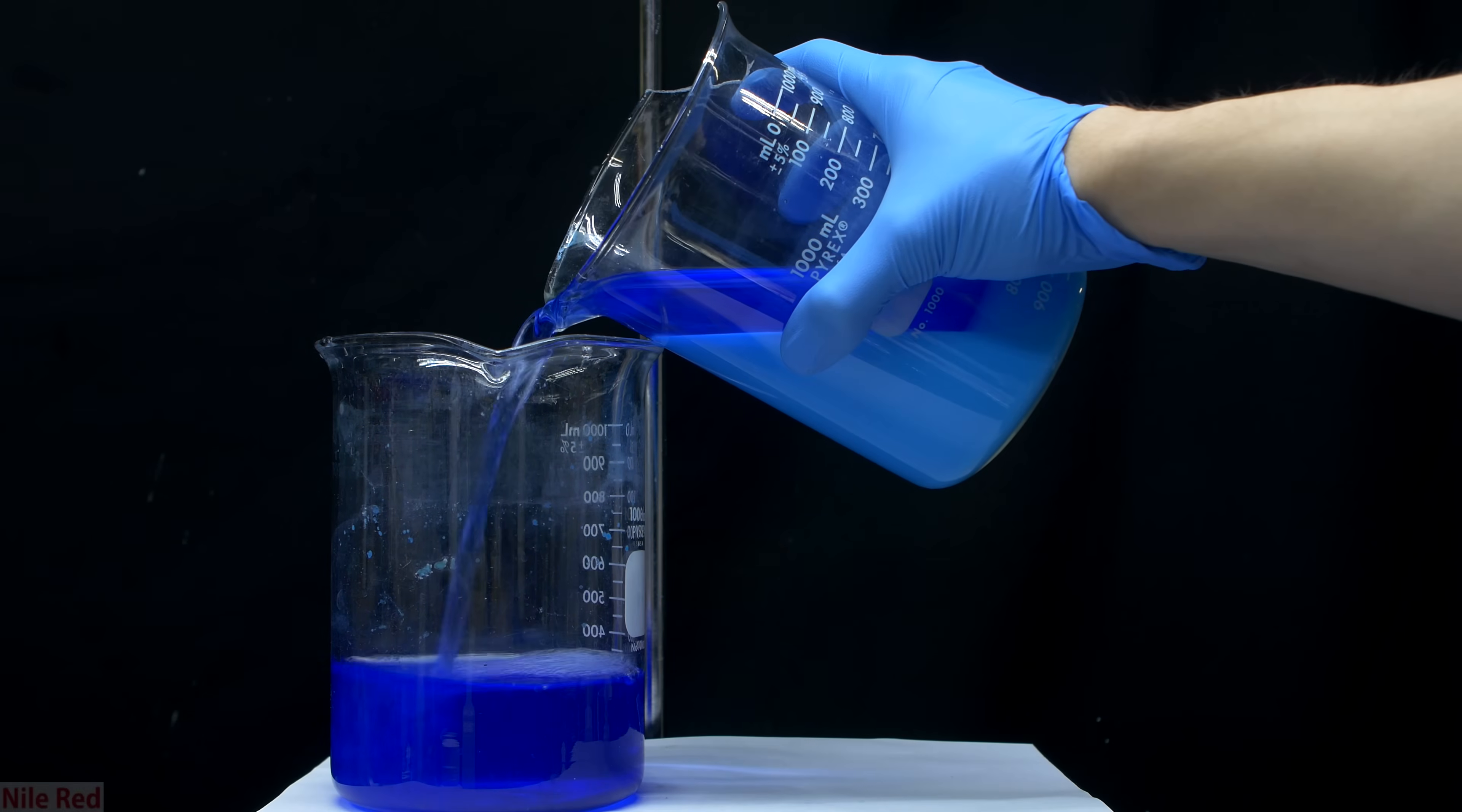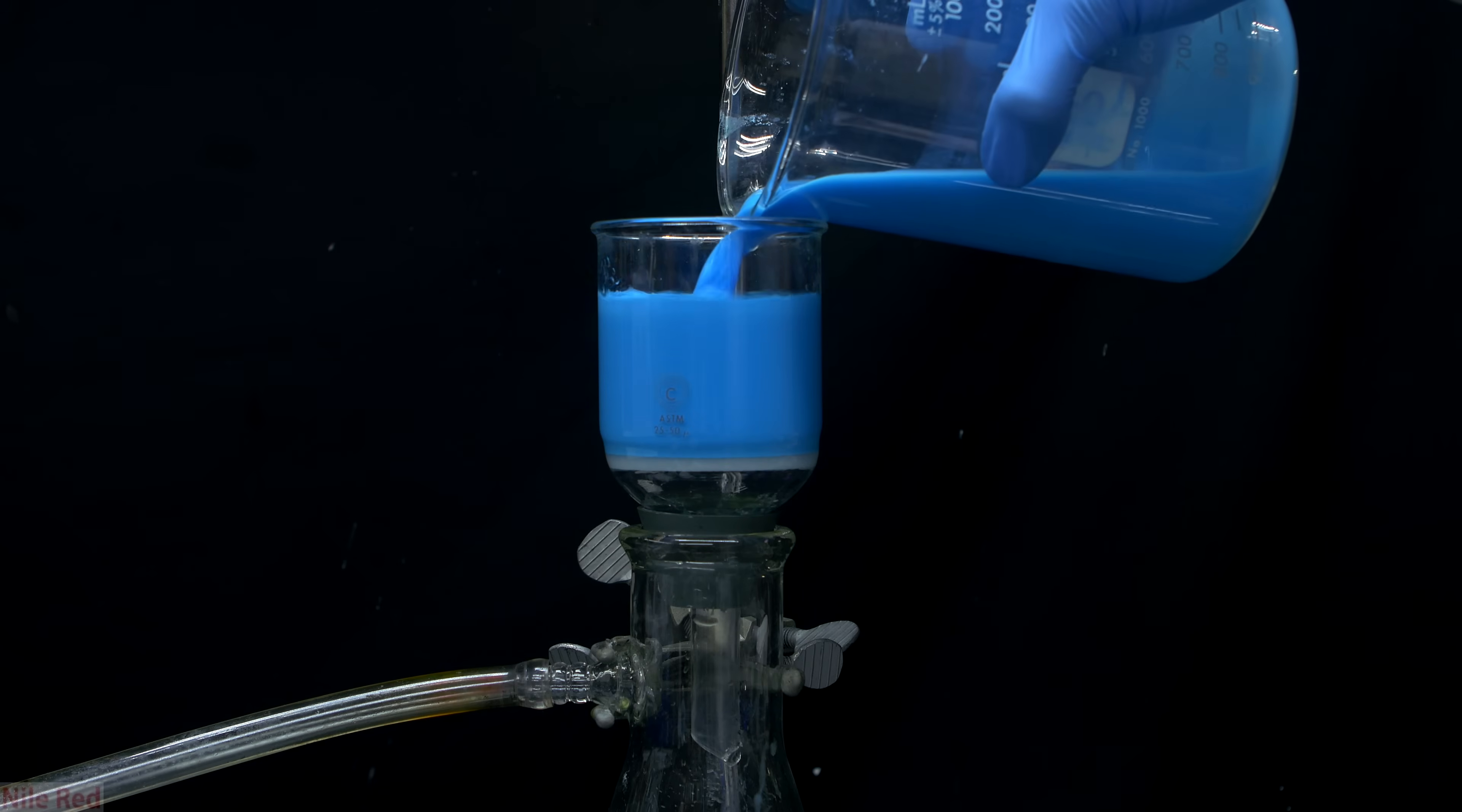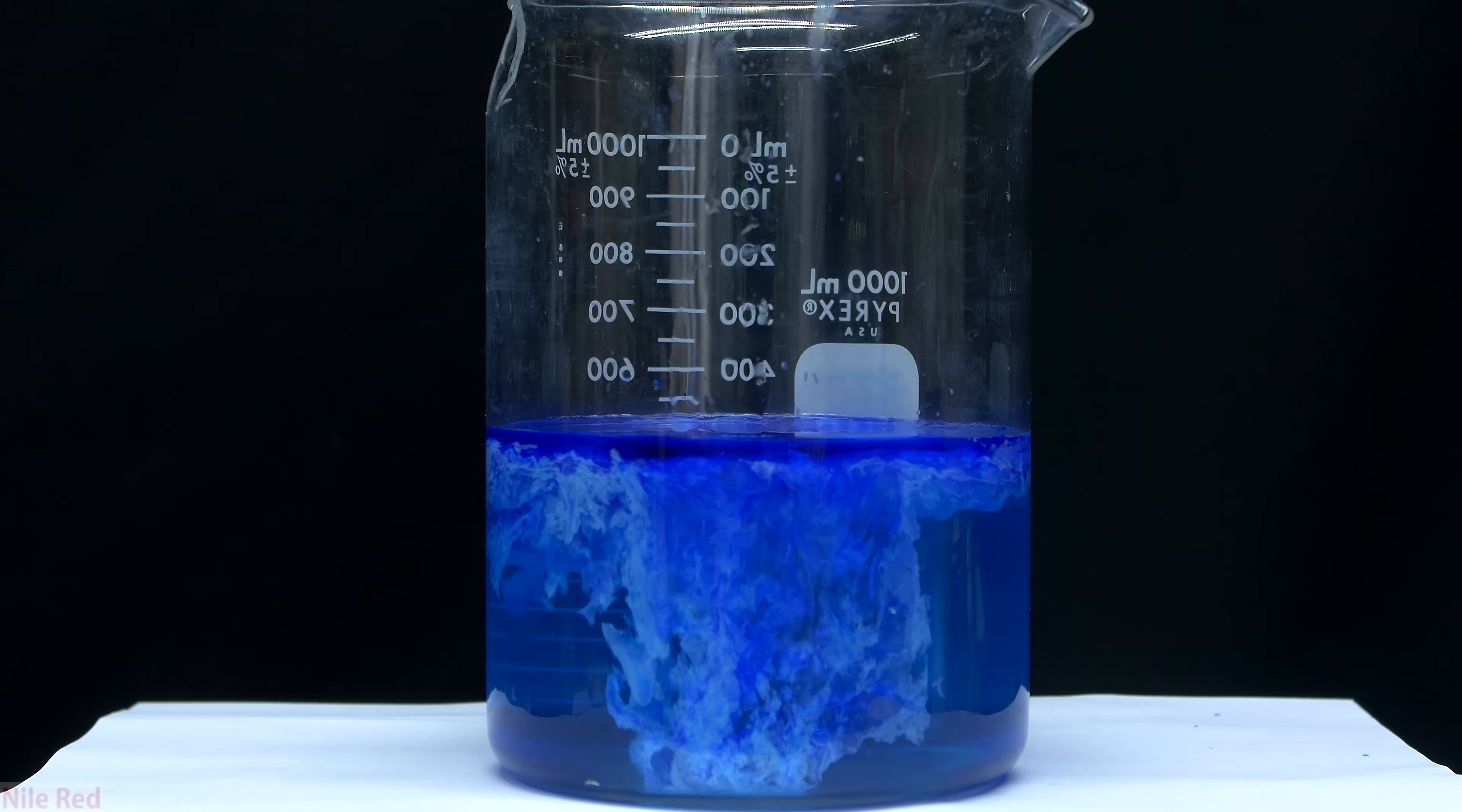Today we're going to be making a little bit of copper hydroxide, which is used commercially as a fungicide or a pigment, but I'm not really interested in that, and I'm actually going to be using it to make something called Schweizer's reagent. I've actually already made a video about Schweizer's reagent, and what makes it so special is that it's one of the few things that can actually dissolve cellulose.